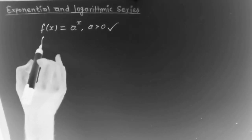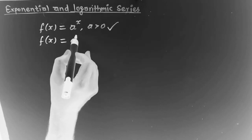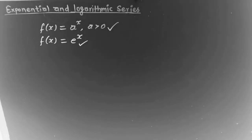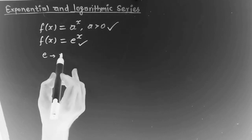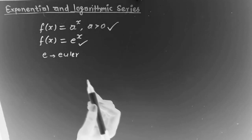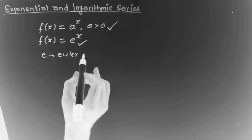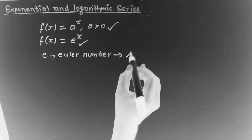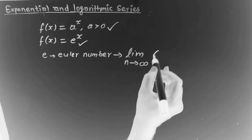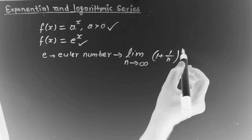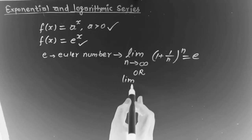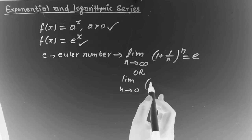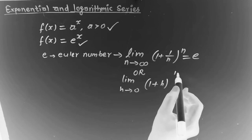The exponential function with base e is the natural exponential function. The base e is the Euler number, defined as the limit as n tends to infinity of (1 plus 1 divided by n) to the power n. Alternatively, it is the limit as h tends to 0 of (1 plus h) to the power 1 upon h.